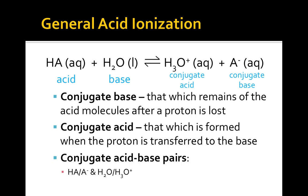Here is the generic equation for the ionization of some theoretical acid, HA, when it dissolves and dissociates in water. In the Bronsted-Lowry model, HA is an acid and water is a base, but the products of this equilibrium are also acids and bases. Two acid-base pairs are shown in this reaction. The acid, HA, forms the A-minus ion once it donates the proton. A-minus is considered the conjugate base of HA. The base, water, forms the hydronium ion once it accepts the proton. Hydronium is considered the conjugate acid of water in this reaction.